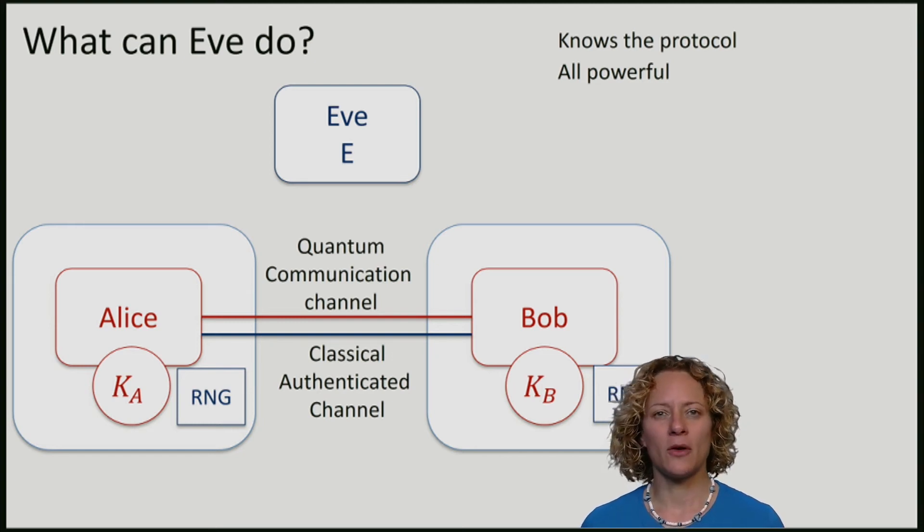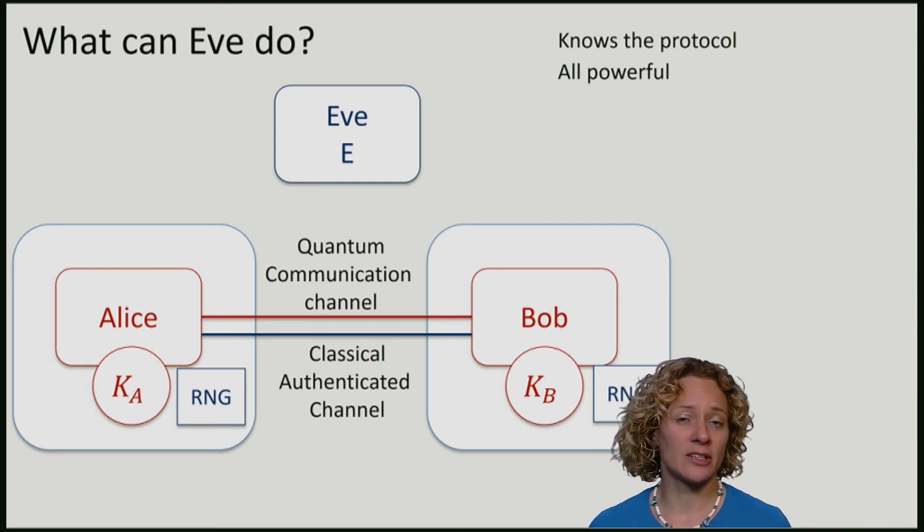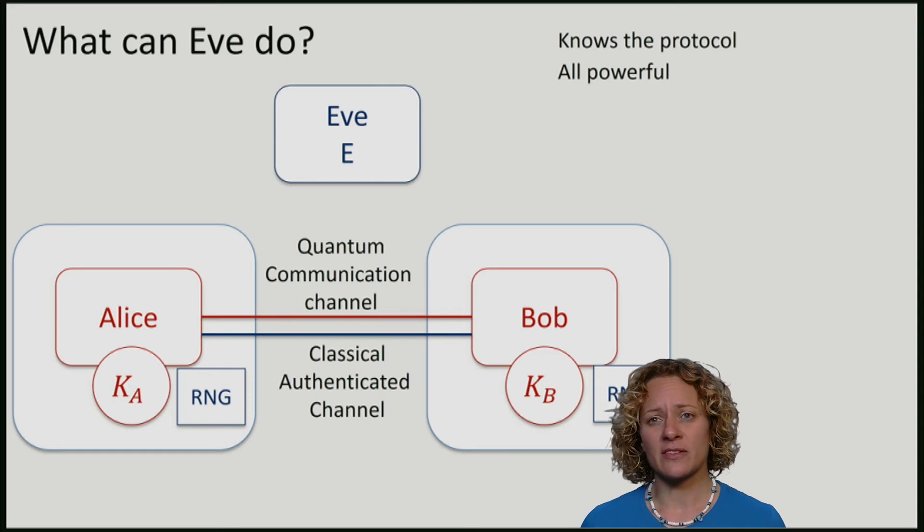Eve also sees a perfect quantum channel. Of course, in a real implementation, Alice and Bob will experience noise in the transmission, even if there's no eavesdropper present. But if Eve is there, she can magically eliminate all of these imperfections. Hence all noise could really be due to Eve's interference.